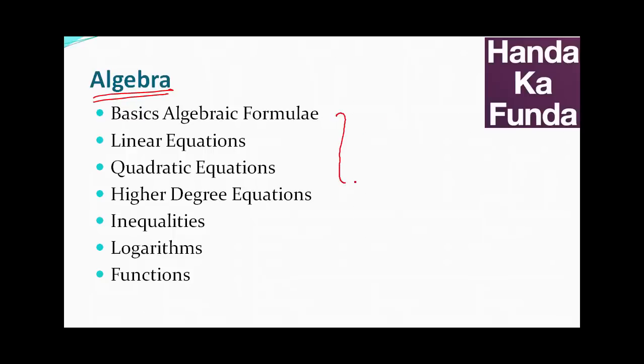Algebra can be broadly divided into these chapters. First and foremost, algebra is probably the most important or the second most important topic when it comes to quant. Typically 7 to 8% of the paper or 7 to 8 questions, because last year the paper was of 100 questions. You can expect that 7 to 8% of questions are based on algebra and most of them come from the functions category.